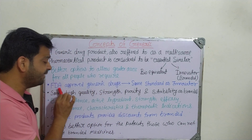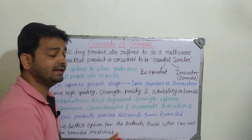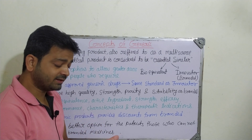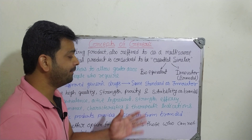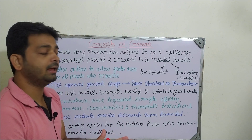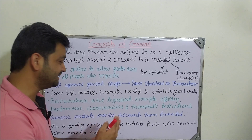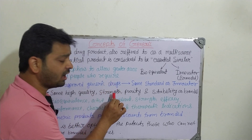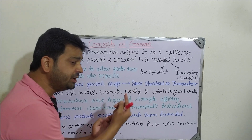The FDA approves generic drugs to the same standard as the innovator. The FDA reviews whether the generic drug being manufactured meets the same standards as the branded drug. Only if it fulfills those standards will the FDA approve it for manufacturing and sale. It must have the same high quality as the branded drug, including the same strength of active ingredient.